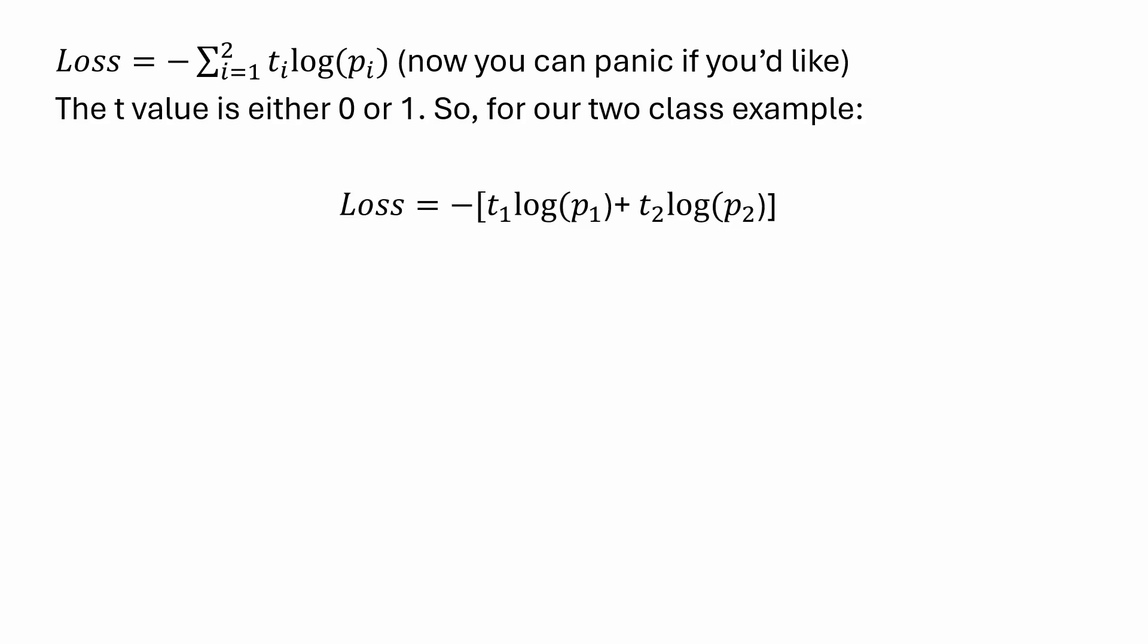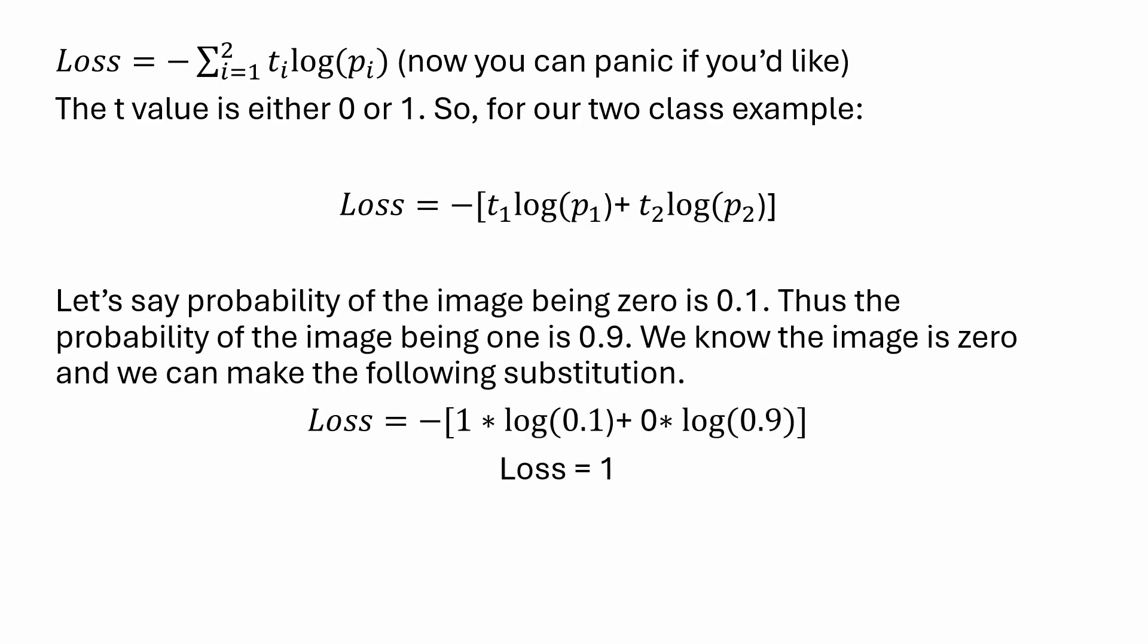There are two classes. Those are the two classes that we have in this loss equation where the Ts are: is it that label or is it not that label? Let's do a practice calculation. Let's say that the probability of the image being zero is 0.1. That makes the probability of the image being 1 equal to 0.9. We know that the image is a zero. That means that T1 is one and T2 is zero. The log of 0.1 is negative one. Negative one times negative one is positive one. The loss is one.